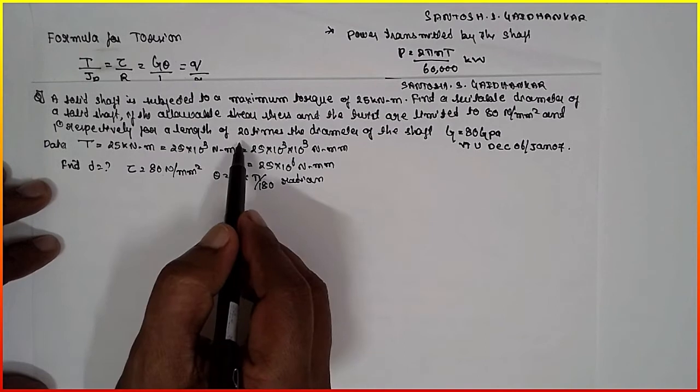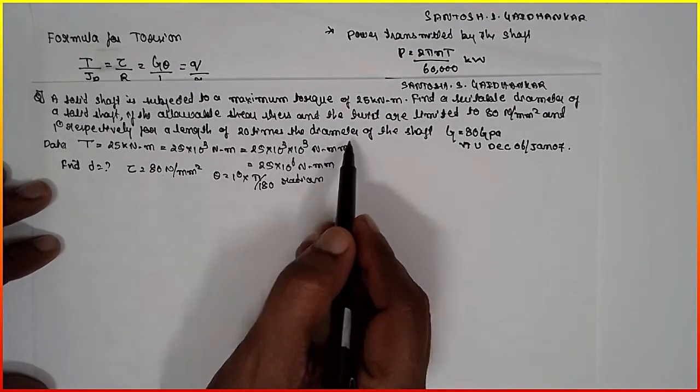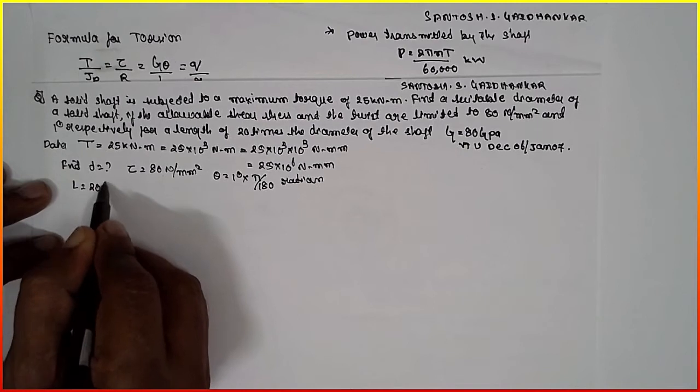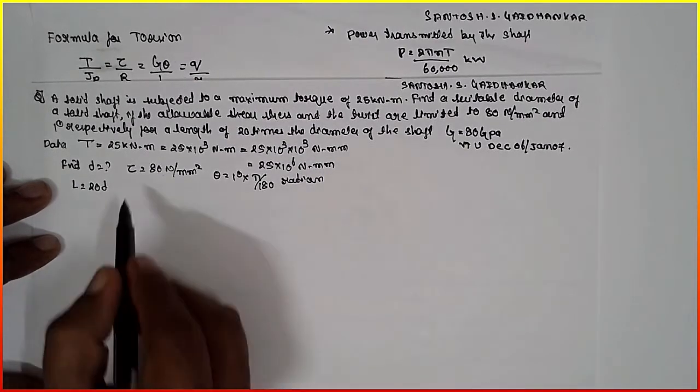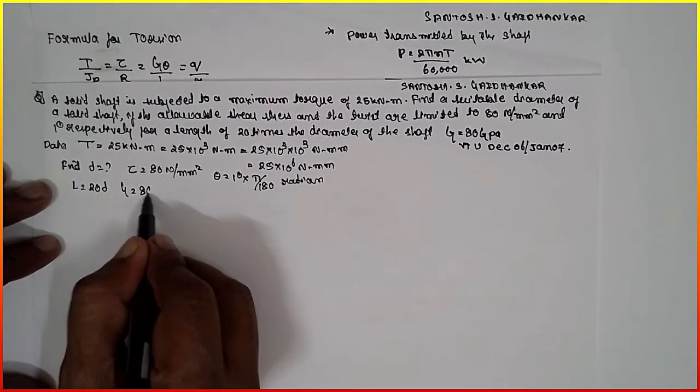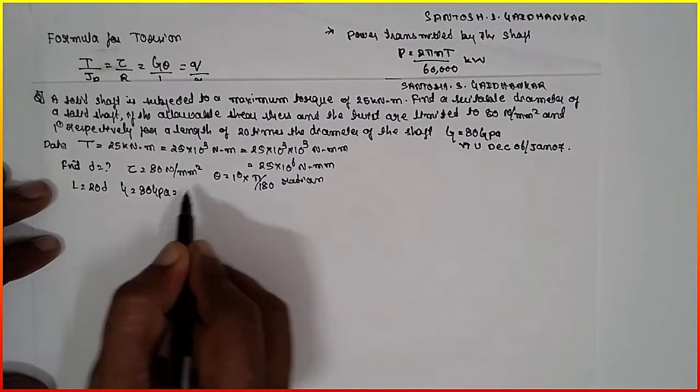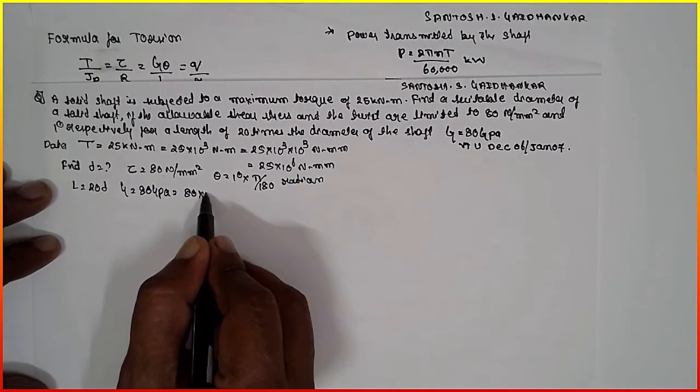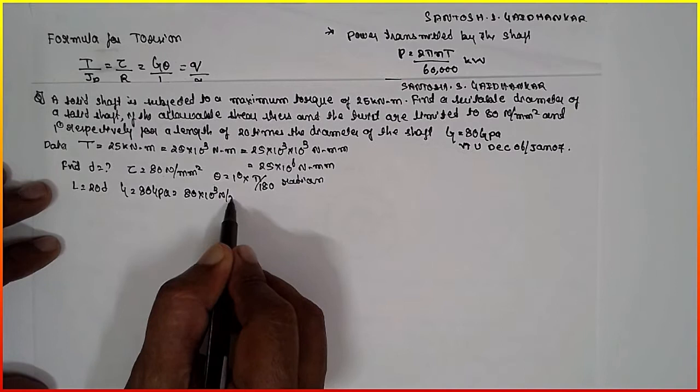For a length of 20 times the diameter, length is given as L equals 20 times the diameter of the shaft. G is given as 80 GPa, which is nothing but 80 into 10 raised to 3 N per mm squared.